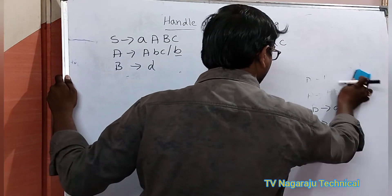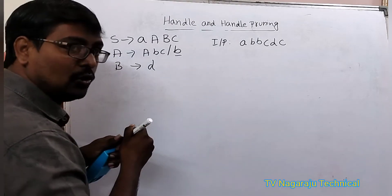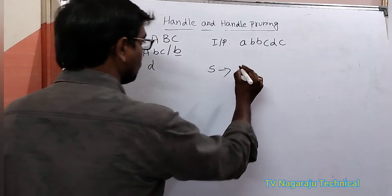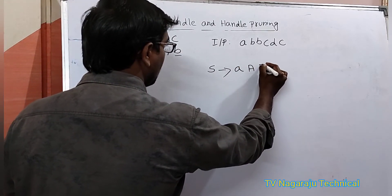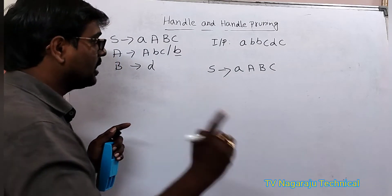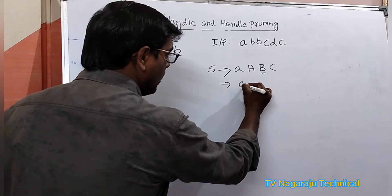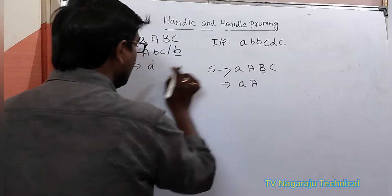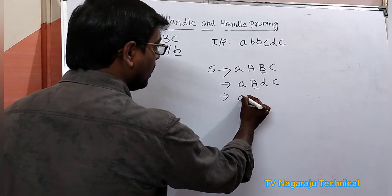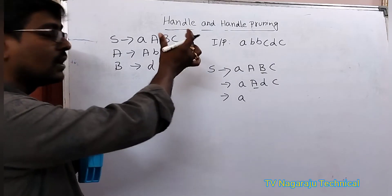Consider this grammar and this string. How do we derive? We always start from the starting symbol. S tends to A, A, B, C. For rightmost derivation in reverse order, first we replace the rightmost non-terminal A — B is replaced with D. Then replace the next non-terminal A. We already know the handle, so we simply move in the reverse direction.